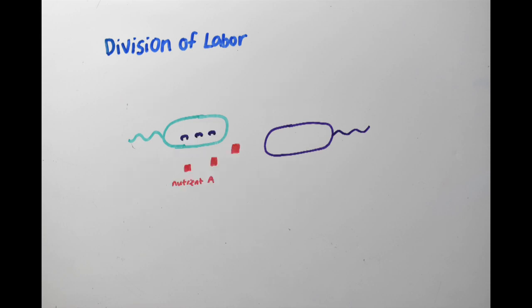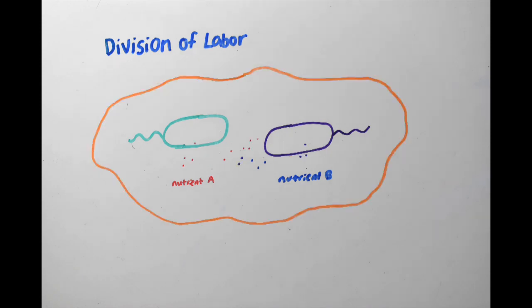For example, one species might only secrete enzymes that can digest nutrient A, while another might only be able to secrete enzymes that digest nutrient B. In a biofilm, now both these nutrients are available for use. Furthermore, a waste product of one species might serve as a useful substrate for another, meaning available resources are used more efficiently.